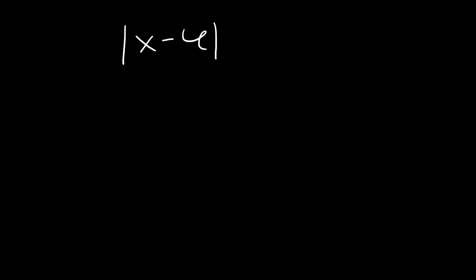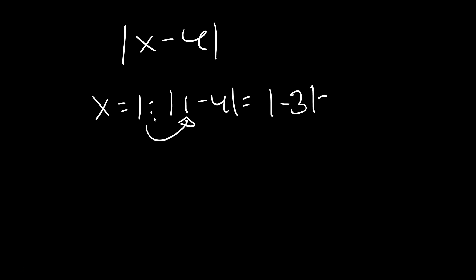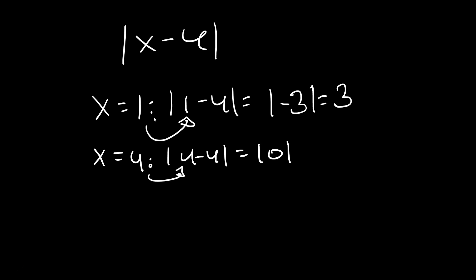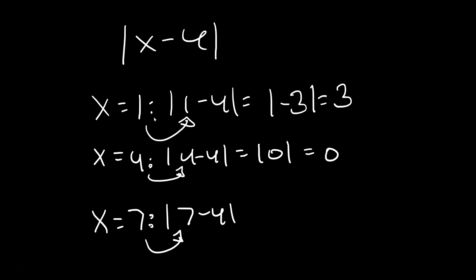What happens when you have expressions to evaluate? Take x minus 4 inside absolute value bars. Plug in different values of x. When x is 1: absolute value of 1 minus 4 is the absolute value of negative 3, which is positive 3. When x is 4: absolute value of 4 minus 4 is the absolute value of 0, which equals 0. When x is 7: absolute value of 7 minus 4 is absolute value of 3, which is positive 3.